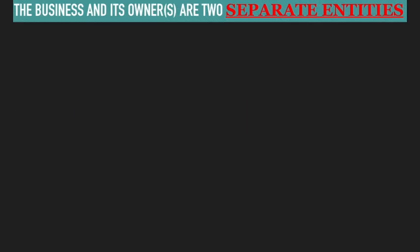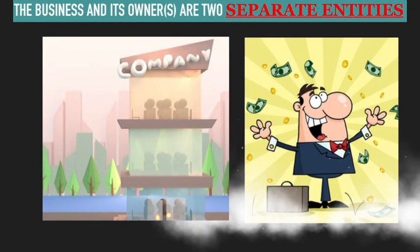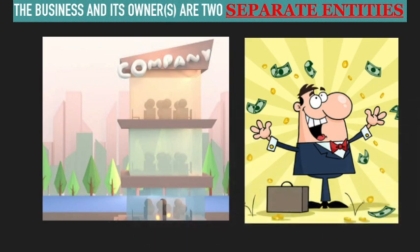What is the business entity concept? Business entity concept means that business and owner are separate entities. Business books of accounts are different; owner books of accounts are different. If any transaction is related to the business, it will be recorded in the business books. And if any individual buys or sells anything, it will come into the individual books of accounts.